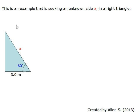This is an example that is seeking an unknown side x in a right triangle. Since we know the angle and the adjacent side, we know the proper trigonometric ratio is cosine. Cosine of theta equals the adjacent side divided by the hypotenuse.